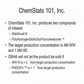To illustrate these basic statistical topics of interest, we have created an example. The company ChemStats 101, Inc. produces two compounds for the pharmaceutical industry: WikiWolf, abbreviated for brevity in this PowerPoint as WW, and Polyhydrogen Delta Oxy Fluoro Awesome, abbreviated as PHDOFA.